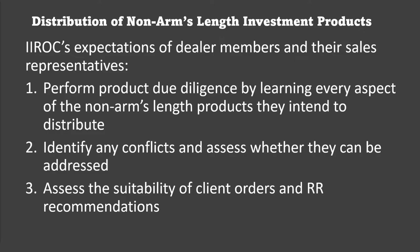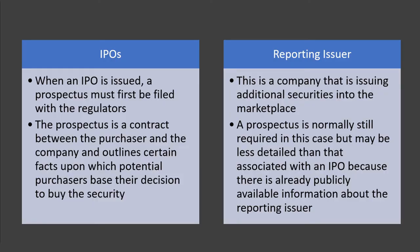There are also some expectations for the distribution of non-arms-length investment products. The following are expectations of dealer members and their sales representatives: perform product due diligence by learning every aspect of the non-arms-length products they intend to distribute; identify any conflicts and assess whether they can be addressed; and assess the suitability of client orders and registered representative recommendations.